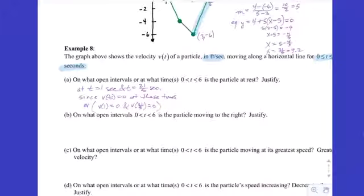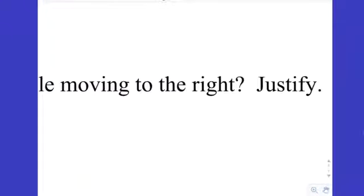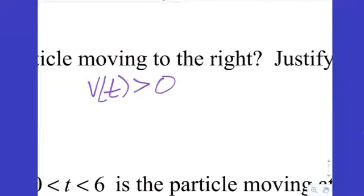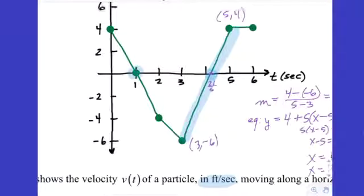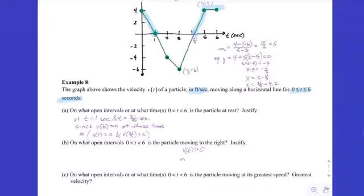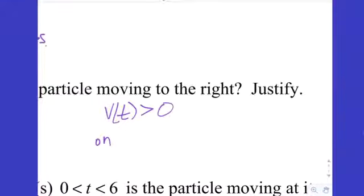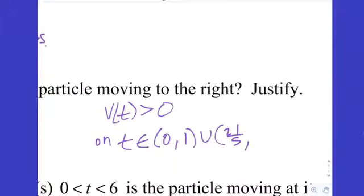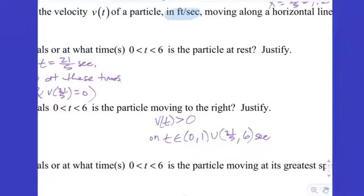Part B: On what open intervals from 0 to 6 is the particle moving to the right? Let's justify first. v(t) greater than 0 — moving to the right — means above the t-axis. On the open interval, that's from 0 to 1 union 21/5 to 6 seconds. So: t in (0,1) union (21/5, 6) seconds. That's where the graph is above the t-axis, expressed with the union symbol.